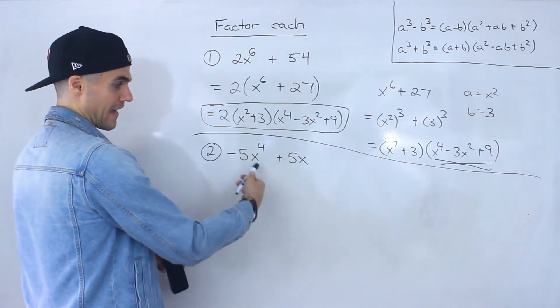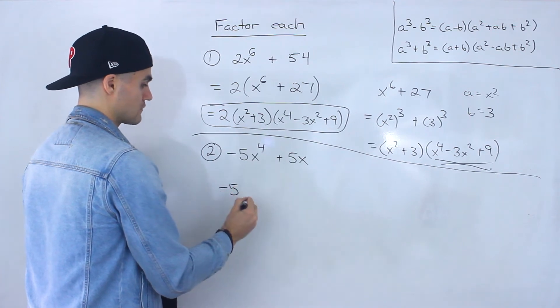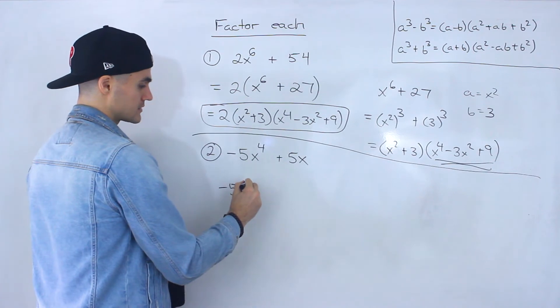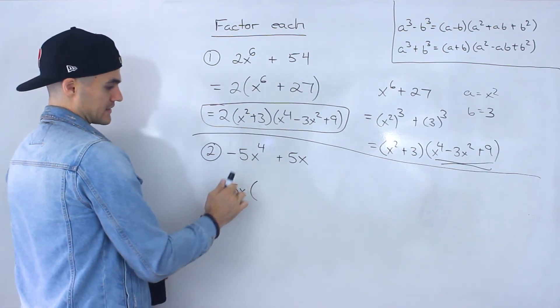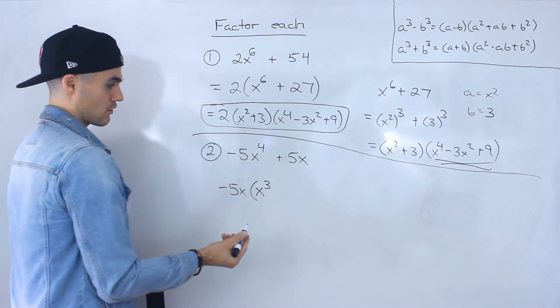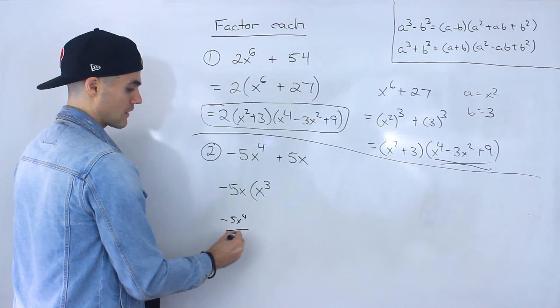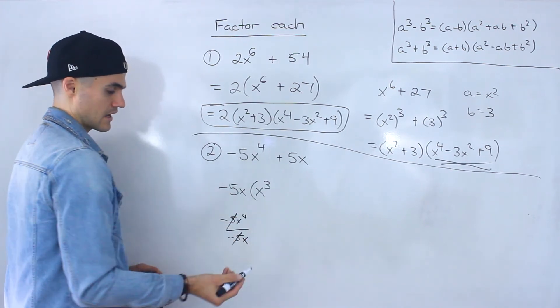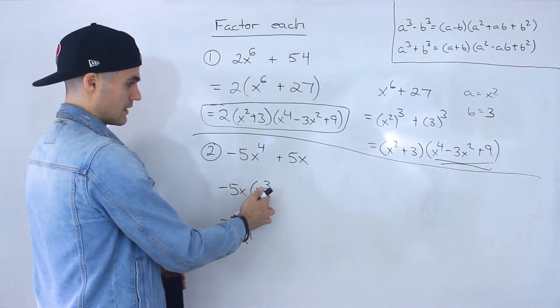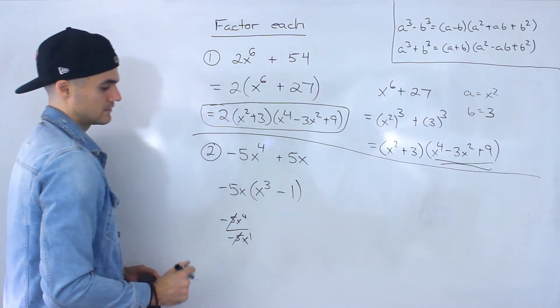We could factor out a 5 and we could factor out an x. And you know what? I'm actually going to factor out a negative 5x just to make this leading coefficient positive. I personally like to do that. So if I take out a negative 5x from negative 5x to the 4, we would be left with an x to the 3. Negative 5x to the 4 divided by negative 5x. Notice these negative 5s cancel out. x to the 4 over x to the 1 is x to the 3. And then 5x divided by negative 5x is just minus 1.